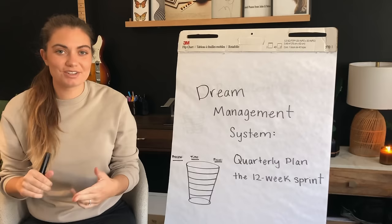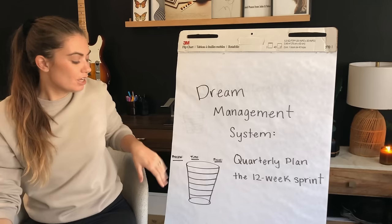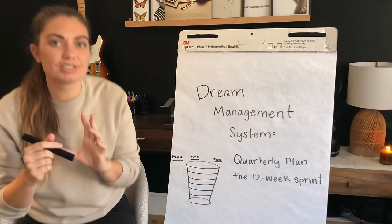Today I want to talk to you all about my dream management system, and this is how I quarterly plan and make my 12-week sprints. Right here I have this time funnel that you'll see, and I want to talk about just the different delineations of time. I have a specific planning process for each of those delineations of time.